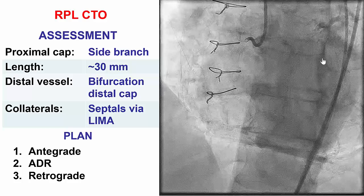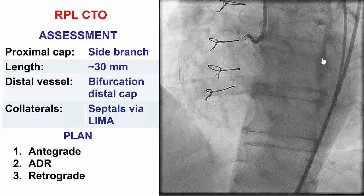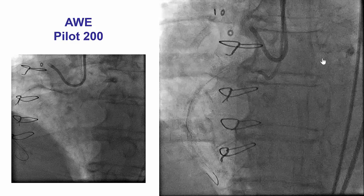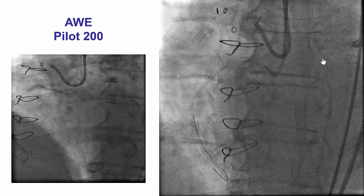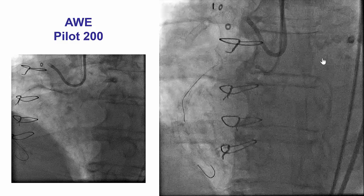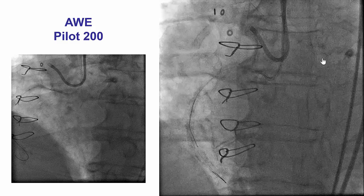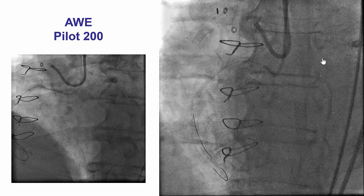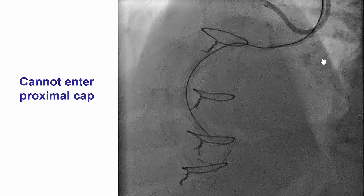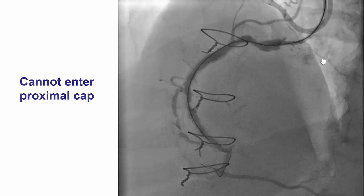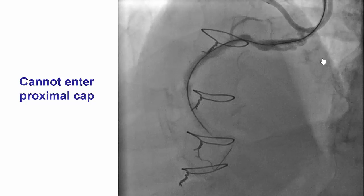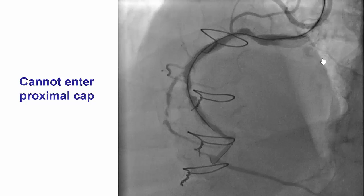Of note, the patient's ejection fraction was normal at 55%. It was extremely challenging both engaging the right coronary artery and advancing equipment because of the severe calcification. We had significant difficulty advancing wires and could not deliver a microcatheter until after we ballooned the proximal right coronary artery.